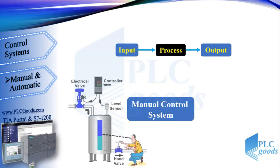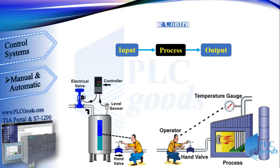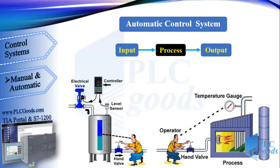In a manual control system, the performance of the system is highly dependent on the operator. This system has no special hazards, but for high-risk systems the manual control method is not suitable because of system maintenance and also operator safety. Today, many industrial processes are controlled automatically, where the output status is used to determine the system input.